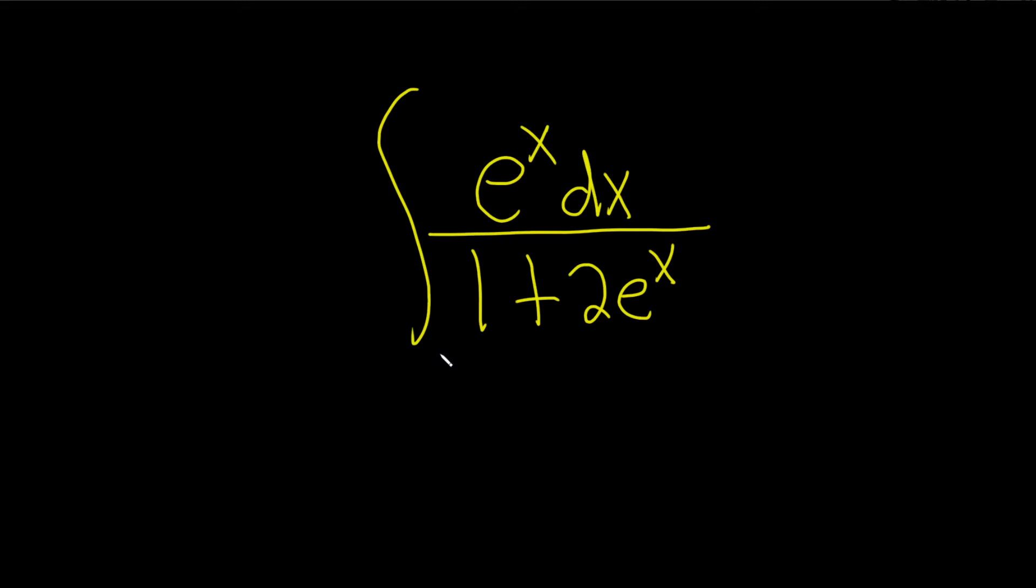So typically u is like your inside piece. However, in this case we have a fraction, so we're going to let u be the bottom piece. Because you see, if you take the derivative of the bottom, you're going to get an e to the x, and you have an e to the x in the problem. So that's a good choice.